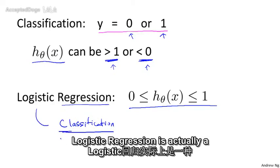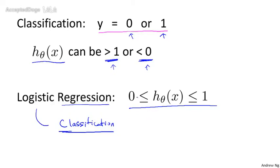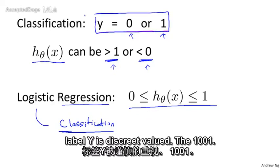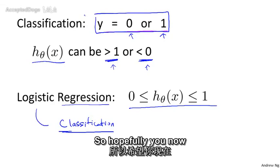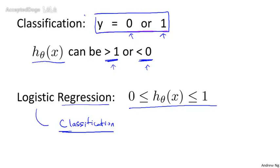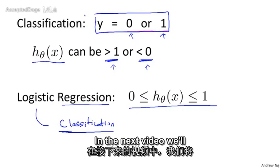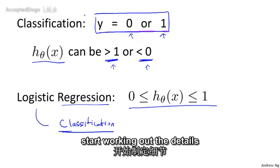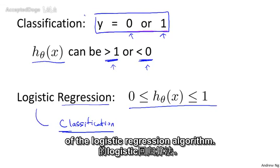Logistic regression is actually a classification algorithm that we apply to settings where the label y is discrete value, when it's either zero or one. So hopefully you now know why, if you have a classification problem, using linear regression isn't a good idea. In the next video, we'll start working out the details of the logistic regression algorithm.